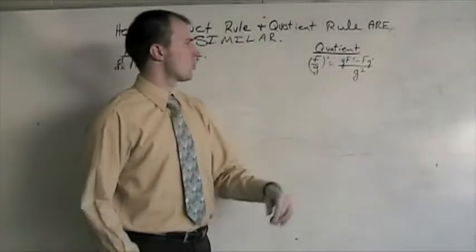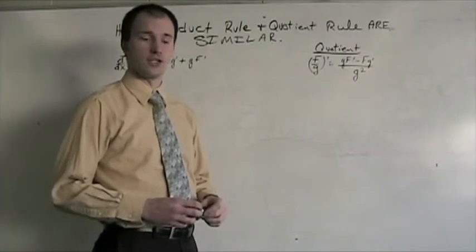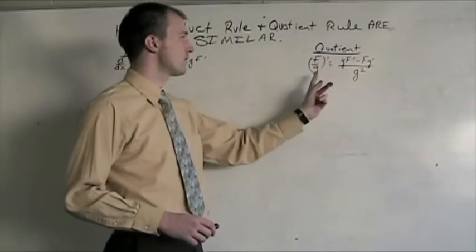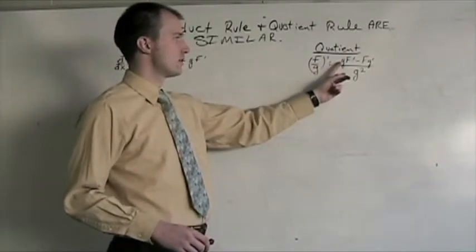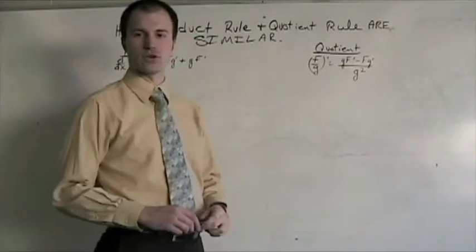Over here, quotient. With the quotient rule, if we've got two differentiable functions f and g, and we want to find the derivative here, it's gf prime minus fg prime over g squared.